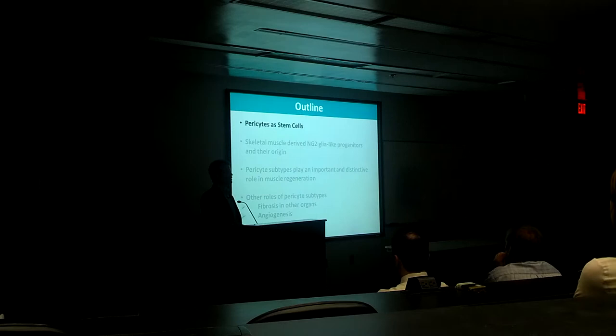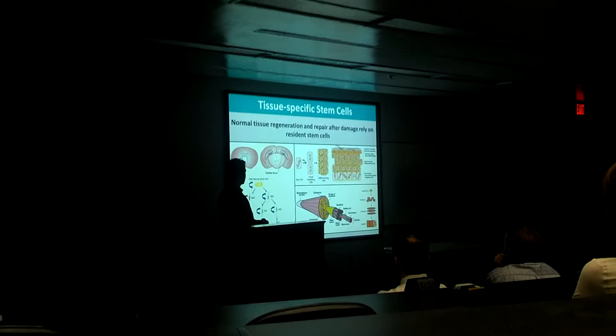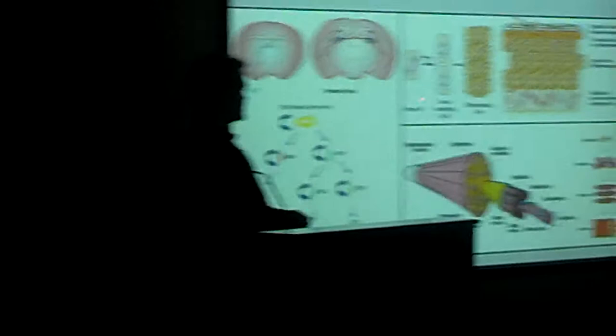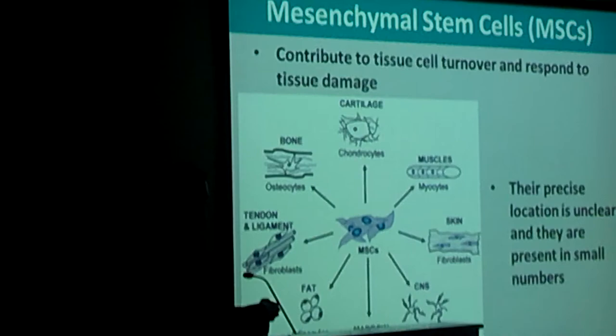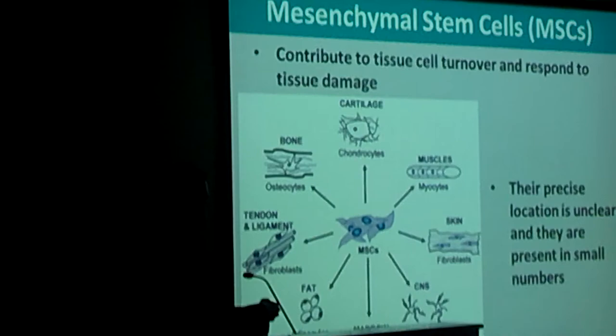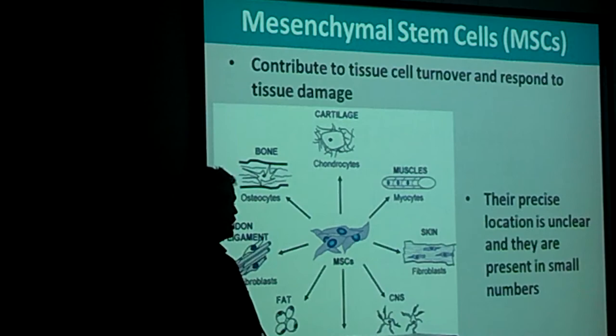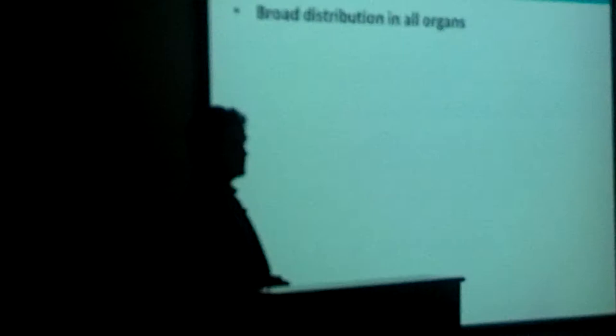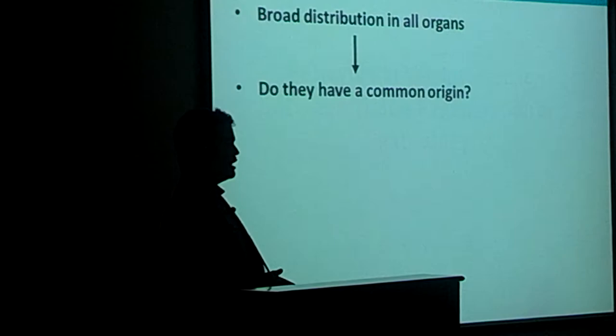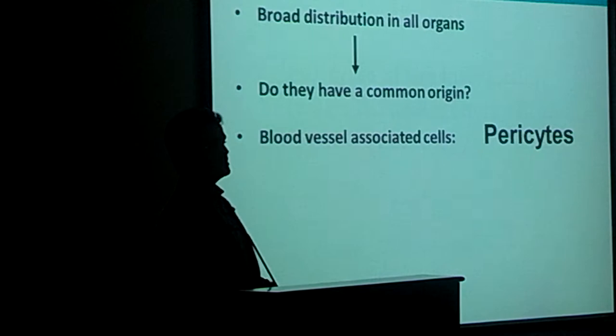Initially, I will introduce the concept of pericytes functioning as stem cells. Every tissue has its own committed stem cells, which are restricted to form cells of that specific tissue — for instance, in the central nervous system with neural stem cells, in the skin, and in the muscle with satellite cells. There are also other stem cells that are not tissue-restricted: the mesenchymal stem cells, which are multipotent and able to form a variety of tissues, contributing to cell turnover and responding to damage. Their precise locations are unclear. Because blood vessels are present in almost every tissue in the body, cells associated with blood vessels, called pericytes, have been proposed to be a common kind of stem cell.